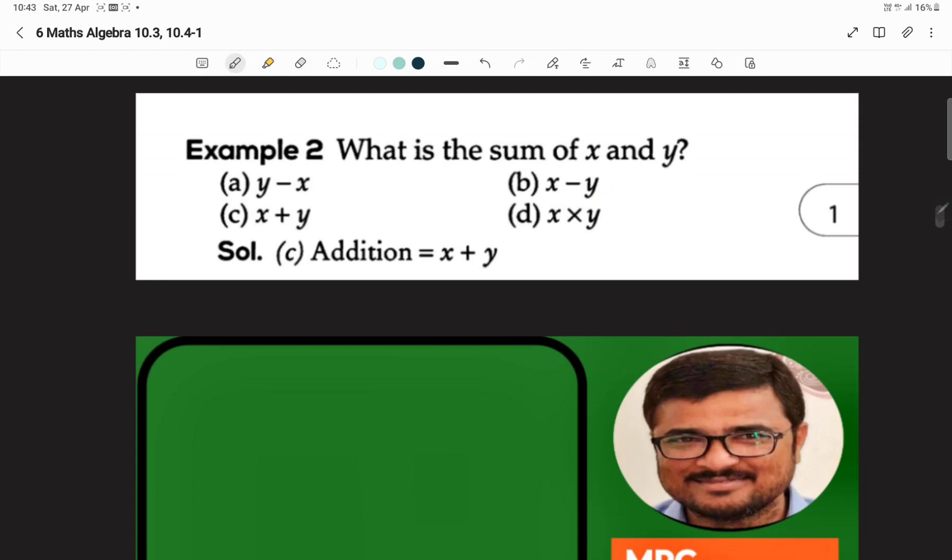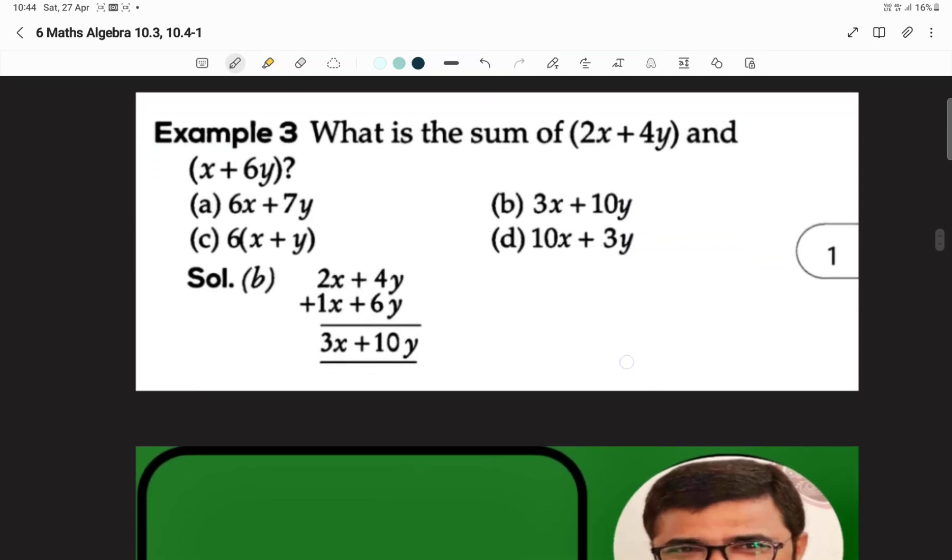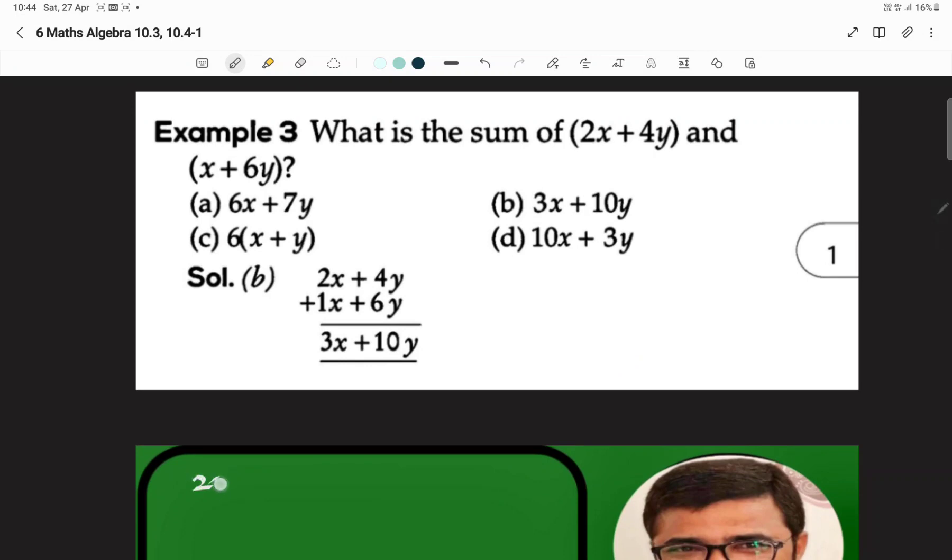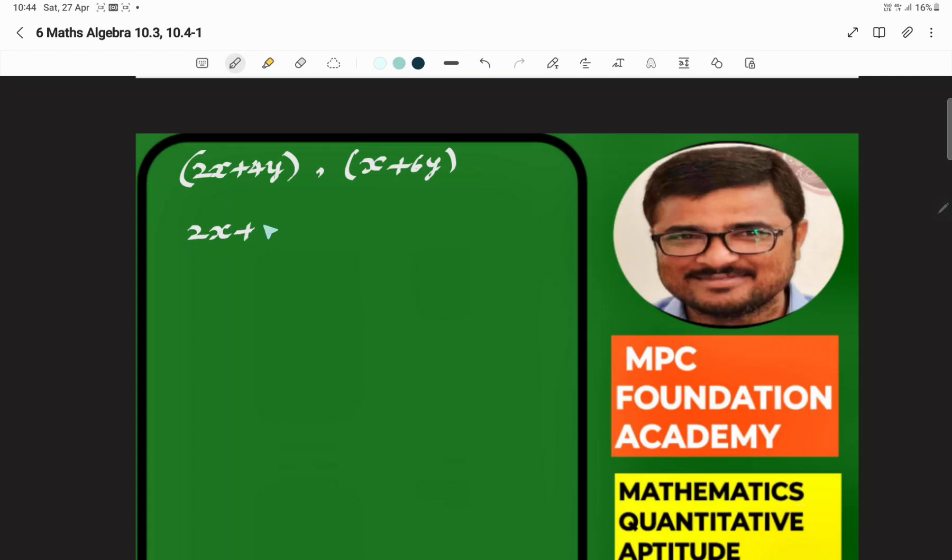You can see the next example. What is the sum of 2x plus 4y and x plus 6y? 2x plus 4y is one polynomial, and x plus 6y is one polynomial. We write it as (2x plus 4y) plus (x plus 6y).